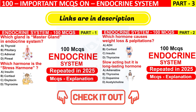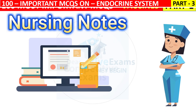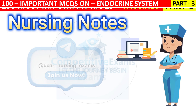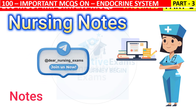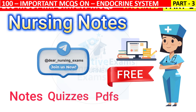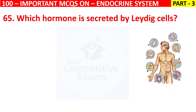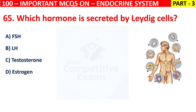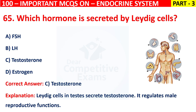Question 65. Friends, if you need nursing-based notes based on our videos, then join our Telegram channel now itself, where you will be given notes, quizzes, and PDFs for free of cost. Join the channel today to make yourself more confident. Question 69: Which hormone is secreted by Leydig cells? Your options are FSH, LH, Testosterone, or Estrogen. The correct answer is C, that is Testosterone. Leydig cells in the testes secrete testosterone. It regulates male reproductive functions.